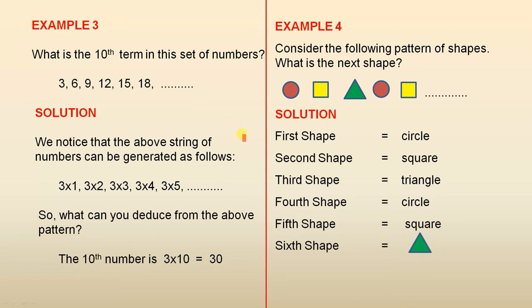We notice that the above string of numbers can be generated as follows. The first one is 3, which is 3 times 1. The second one is 6, which is 3 times 2. The third one is 9, which is 3 times 3. So there's the first, there's the second, there's the third, and there's the fourth, which is 3 times 4.